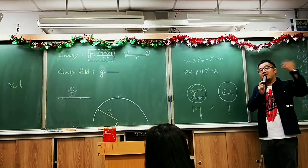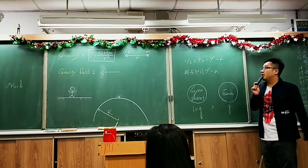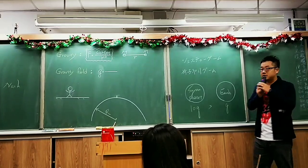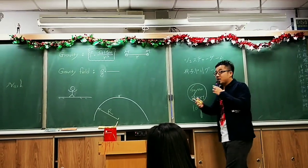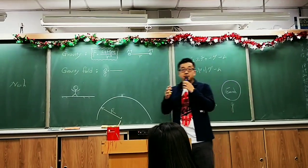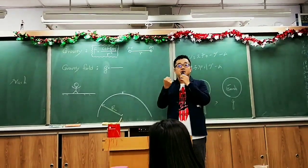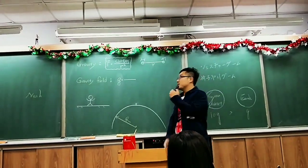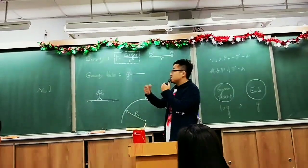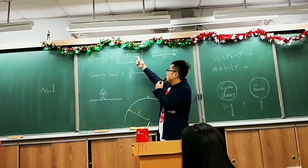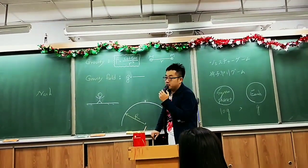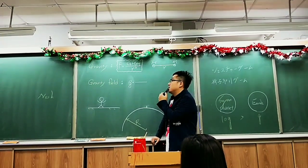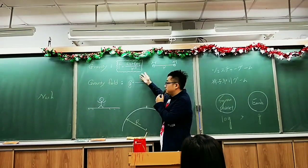From my last class, I taught my students about gravity. That means gravity exists between any two objects with mass. If you have mass, if you're a thing, you're going to attract each other. So we can write the gravity in this formula.